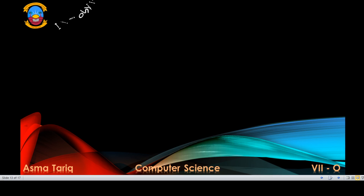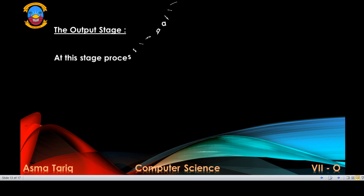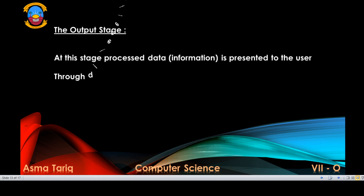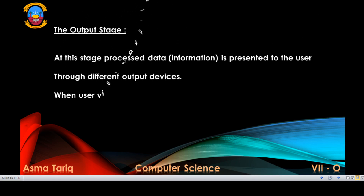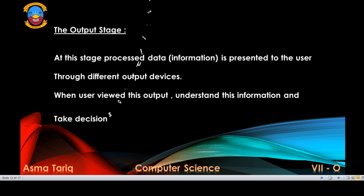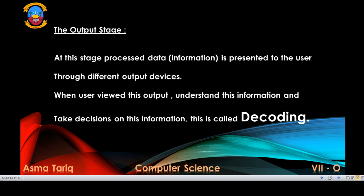The next stage is the output stage, where processed information is presented to the user through output devices like printers, monitors, and speakers. After users have viewed the output, they can understand what the data means and make decisions based on their understanding. This is also called decoding. Decoding occurs when the information that a code represents is made available to the user — for example, when we enter the initials SA and the computer displays the name Shahid Ali on the monitor.